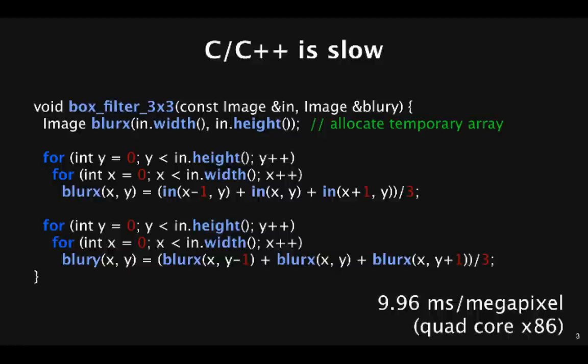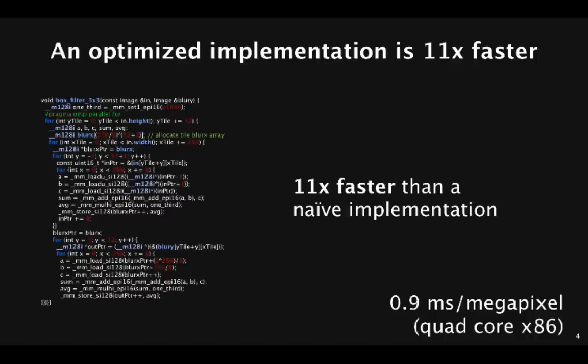This code takes about 10 milliseconds per megapixel on the quad-core x86 that I benchmarked it on. But an optimized implementation for this machine is more than 10 times faster. The code is hideously complex. All we're trying to do is average together 3x3 pixels. But an 11x speedup is too much to ignore.